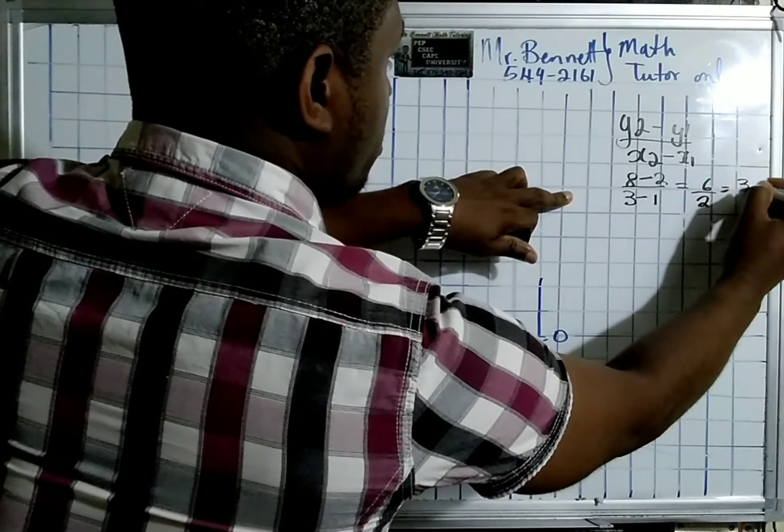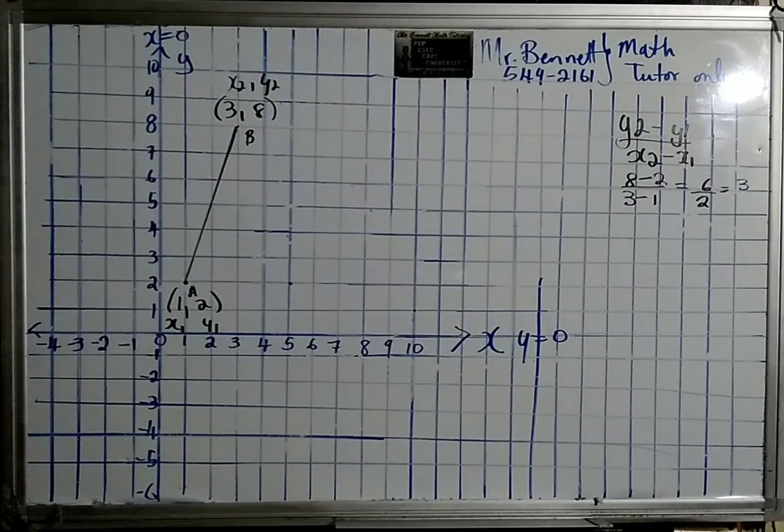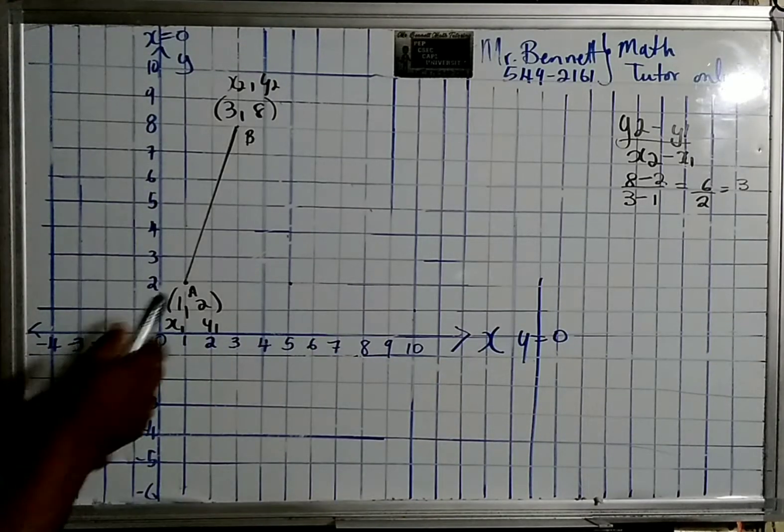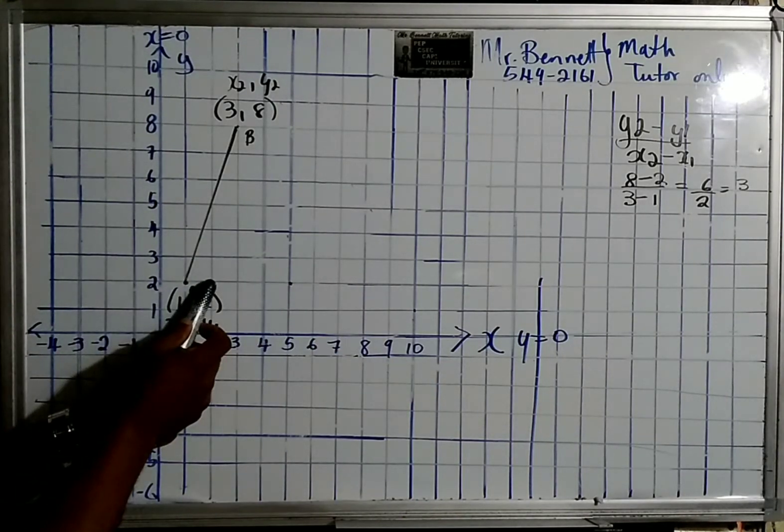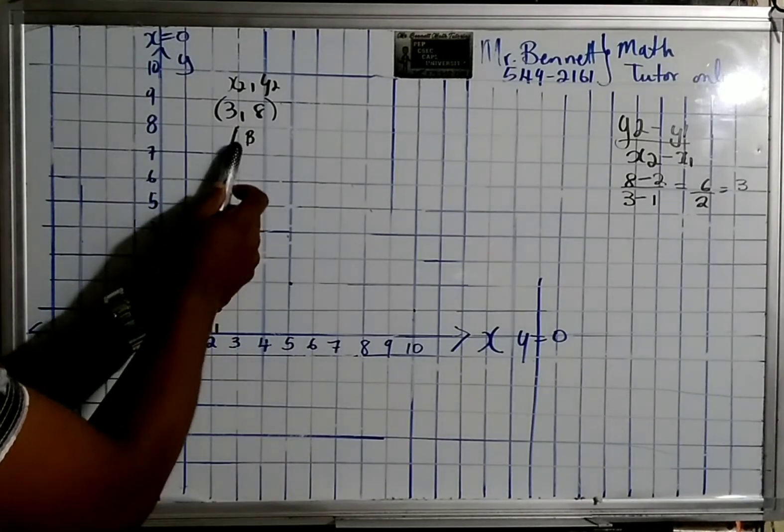So that's the gradient of 3. What that means is for every one x that we move, we're going to go up three places. Let's just look at it: one across, one-two-three up, one across, one-two-three up. So that is the slope of the line.